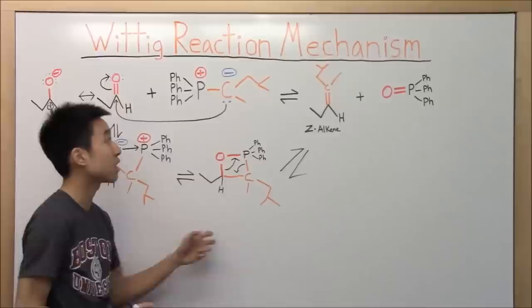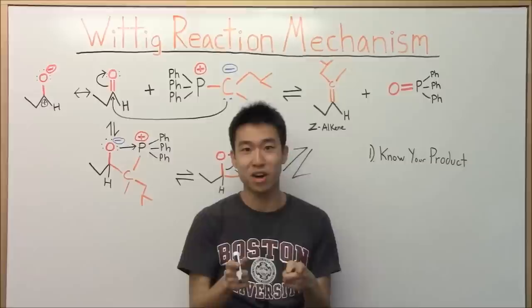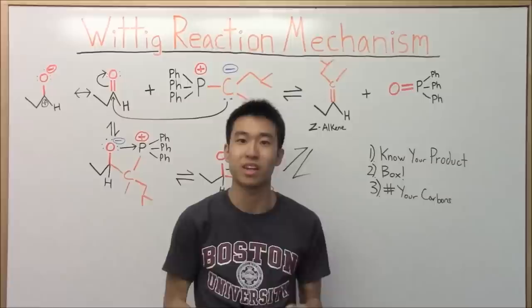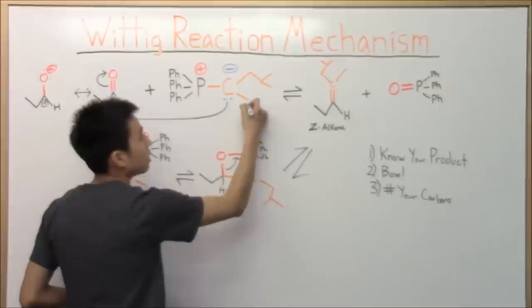And if you guys have trouble keeping track of carbons, I would recommend numbering your carbons when you do the mechanism out. Okay, so in conclusion, tip number one, know your product. Practice your product prediction a lot, so this way you know what your target is in your mechanism. Tip number two, funky box mechanism. Ding! Surprise! And lastly, tip number three, number your carbons. And I'm going to just show you guys what I meant when I said that.